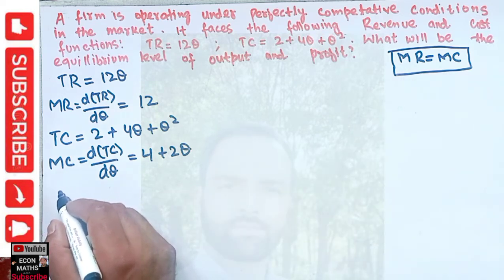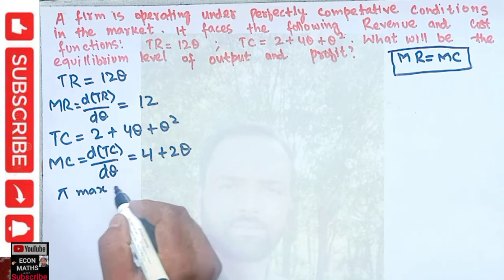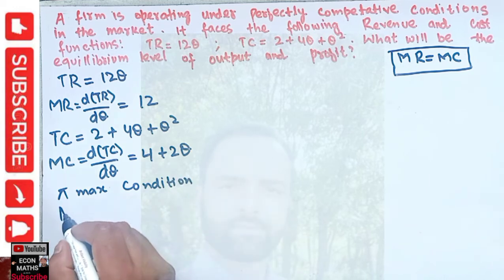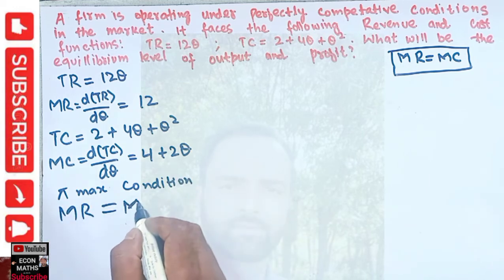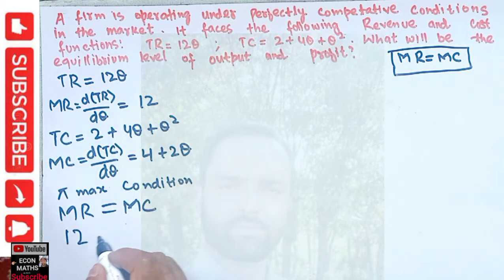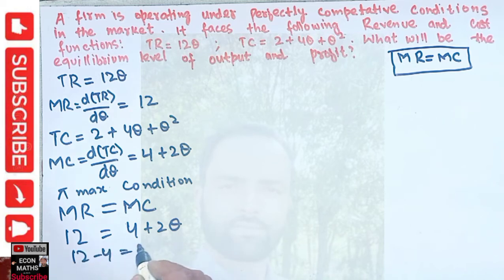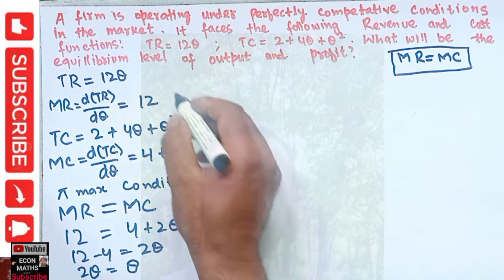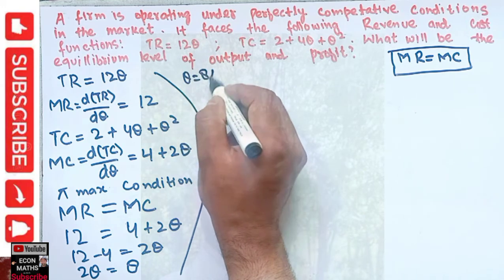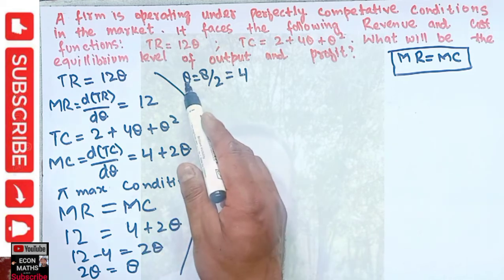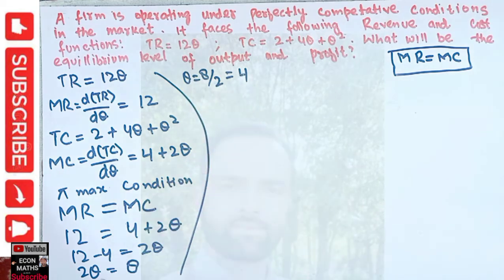The profit-maximizing condition requires marginal revenue equal to marginal cost. Setting 12 equal to 4 plus 2Q, we get 12 minus 4 equals 2Q, so 8 equals 2Q, which gives Q equals 4. This is our equilibrium level of output.